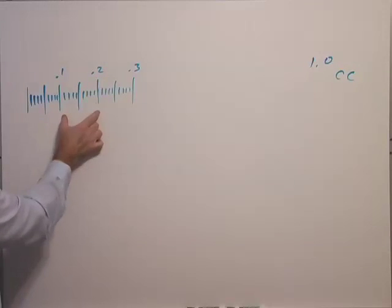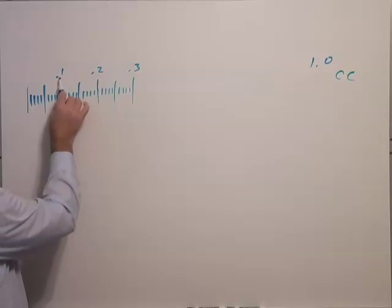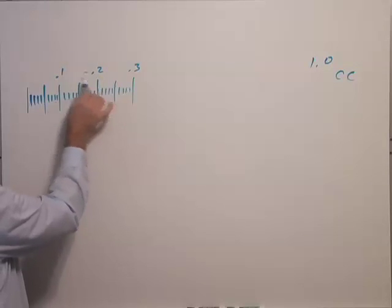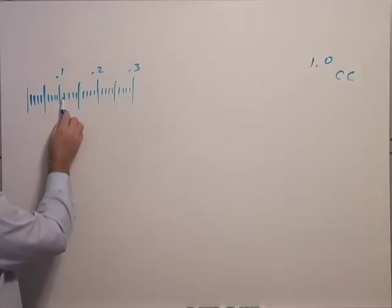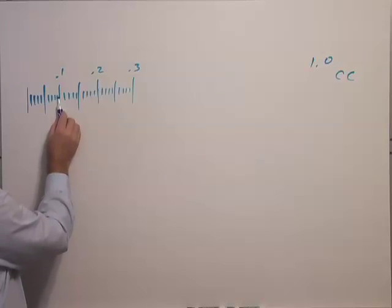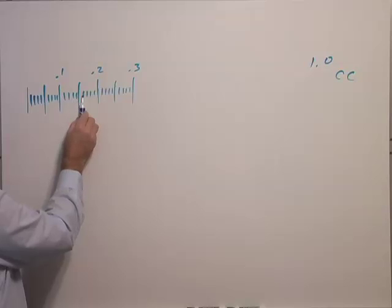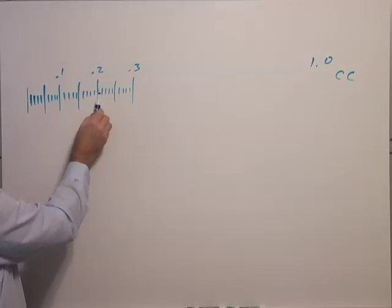And every 2 of these major marks is 1 tenth or 0.1 CCs. And so you can count there's 10 marks between 0.1 and 0.2, for example. So these go by 1 hundredths. In other words, this is 0.11. 0.11 is here. 0.12, 0.13, 0.14, 0.15, 0.16, 0.17, 0.18, 0.19, 0.22.